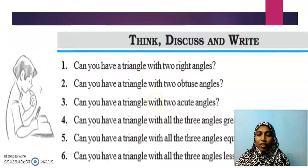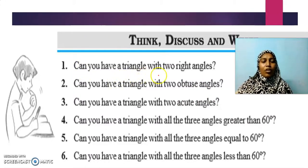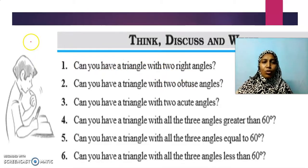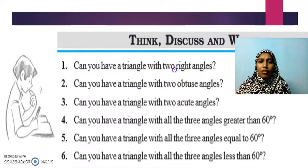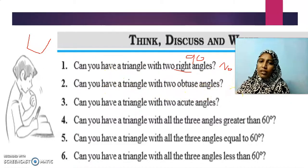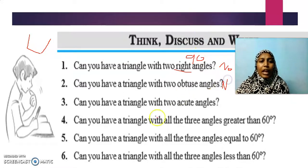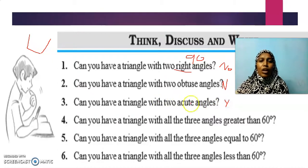Now here are a few questions. Can you have a triangle with two right angles? Two right angles means two 90-degree angles — with just two 90-degree angles already summing to 180 degrees, a triangle cannot be formed. So no, it is not possible. Can you have a triangle with two obtuse angles? An obtuse angle is greater than 90 degrees, so two obtuse angles would exceed 180 degrees. Not possible. Can you have a triangle with two acute angles? Yes, we can have a triangle with two acute angles.